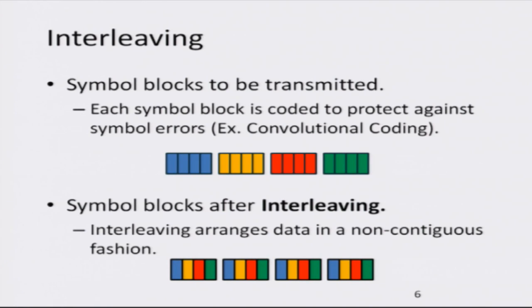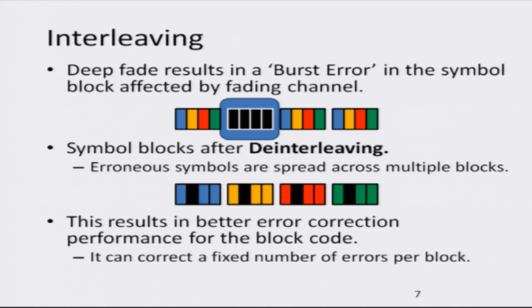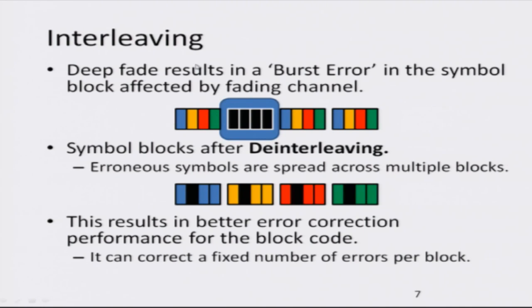Another aspect is interleaving, where the different transmitted bits in a block are transmitted in a jumbled fashion over the air. At the receiver, they are de-interleaved and arranged in an orderly fashion. This protects against a contiguous stream of bits being lost over the channel. This feature is known as interleaving.